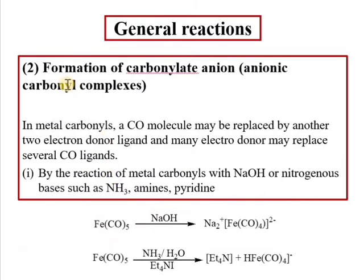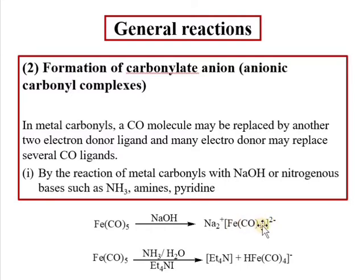The second reaction is the formation of carbonylate anion. Carbonylate anion means that a complex ion like Fe(CO)4 has a negative charge. The formation of carbonylate anion can be achieved by two methods. One method is to treat the carbonyl with NaOH or a nitrogenous base.